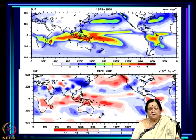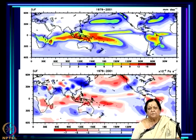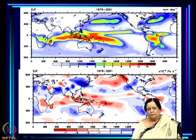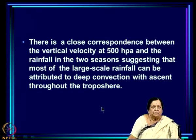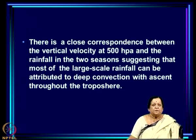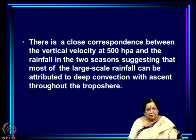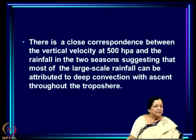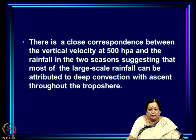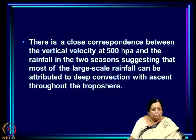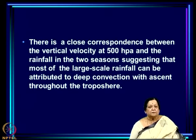The same is true for DJF — a beautiful correspondence between observed tropical rainfall and the vertical velocity of the wind. There is a one-to-one correspondence between large-scale rainfall and ascent. This confirms that most large-scale rainfall in the tropics can be attributed to deep convection — specifically, a tropical convergence zone type system with ascent throughout the troposphere and descent in the surrounding region.